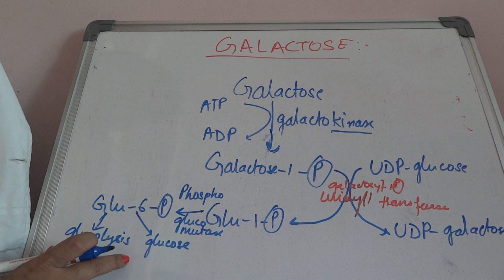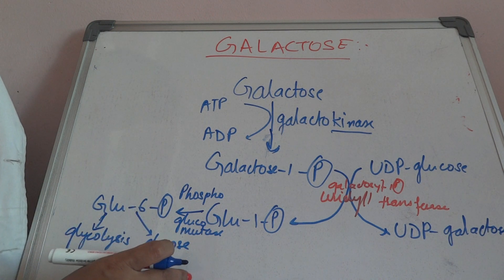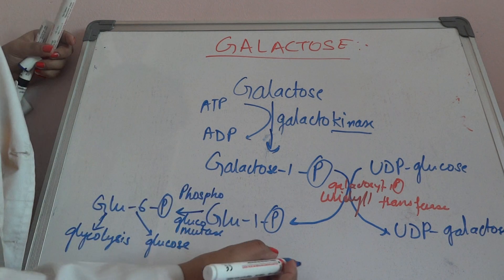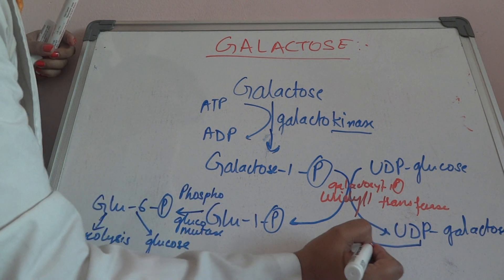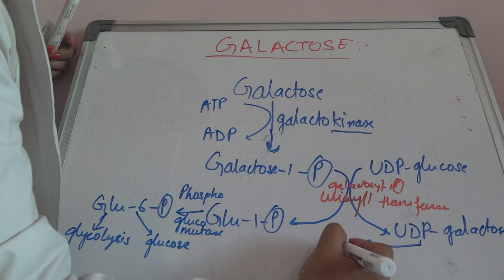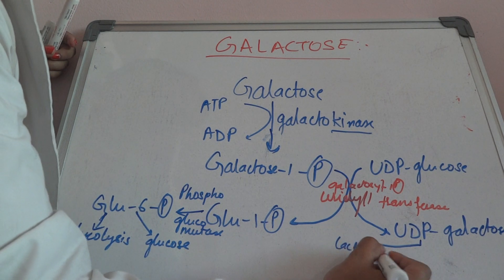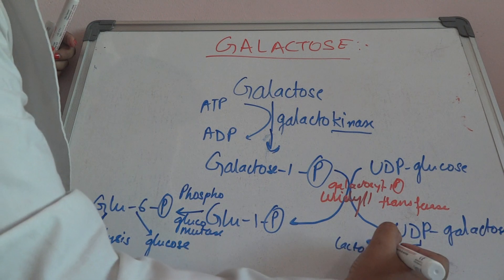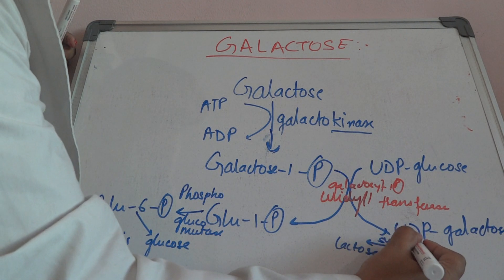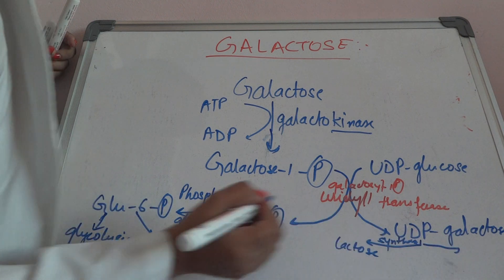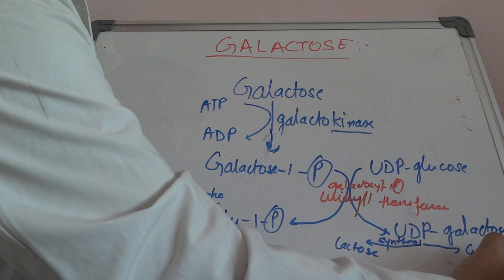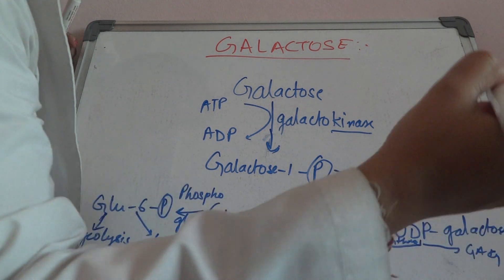UDP galactose can form two molecules: either it can form lactose through lactose synthase, or it can lead to the formation of glycolipids, glycosaminoglycans, and glycoproteins.